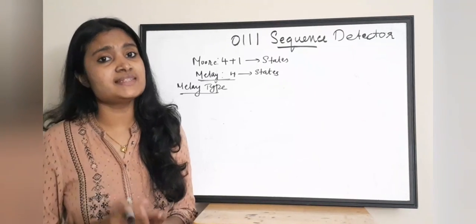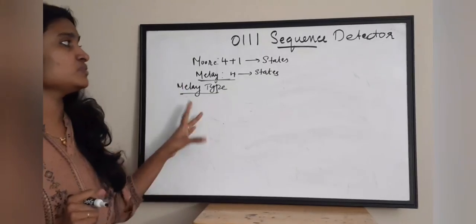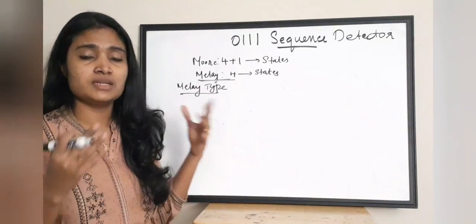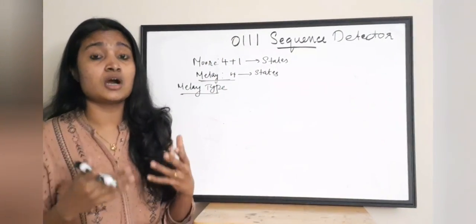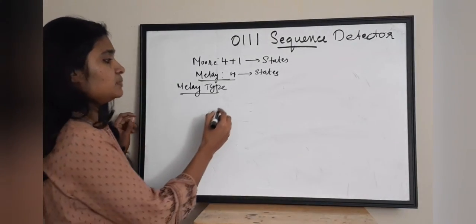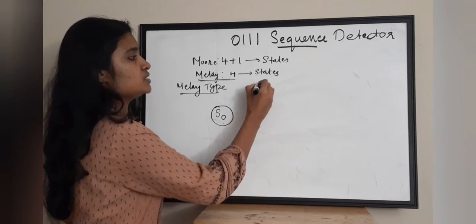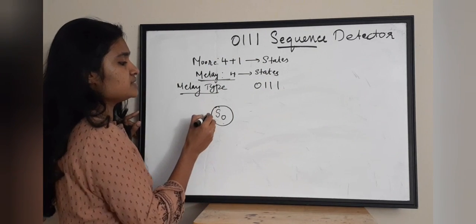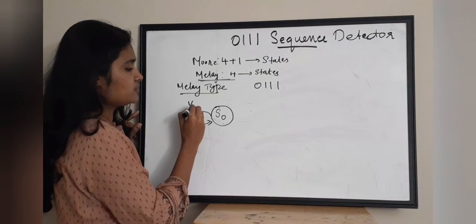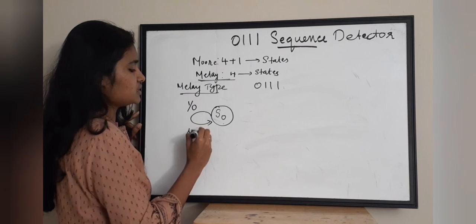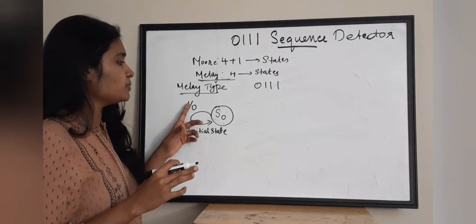Next we design a Mealy type sequence detector for detecting the 0 1 1 1 sequence. In Mealy type, we use only n states where n is the number of bits in the sequence. Here it is 4 bits, so we need 4 states. I take my initial state as S0. In S0, if I receive a 1 I cannot start, so I stay at S0 with output 0.